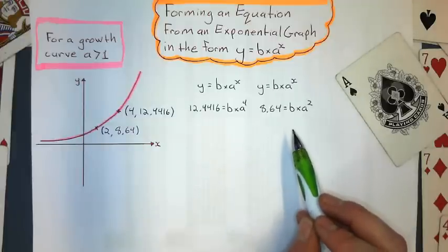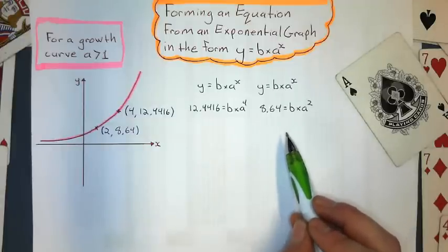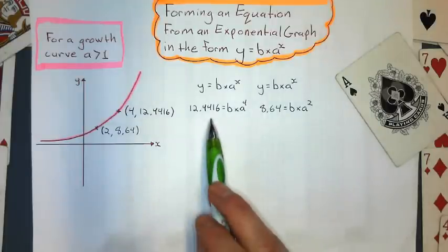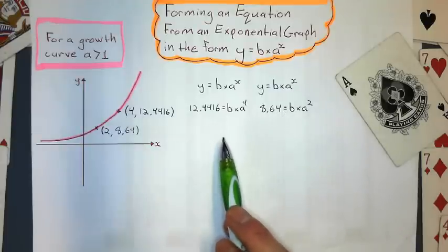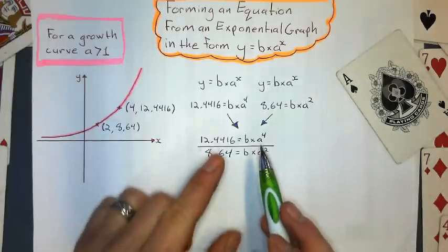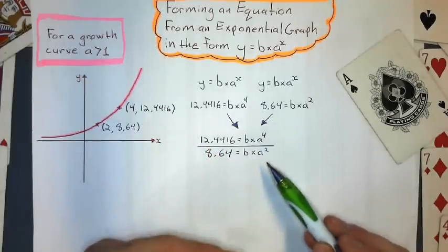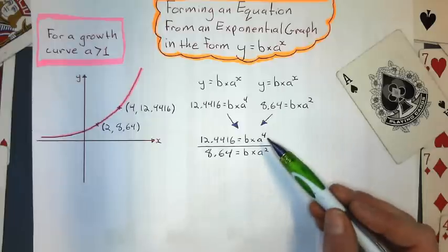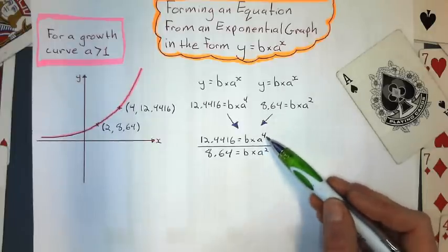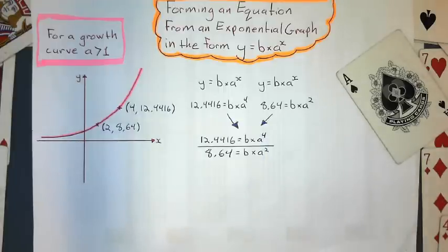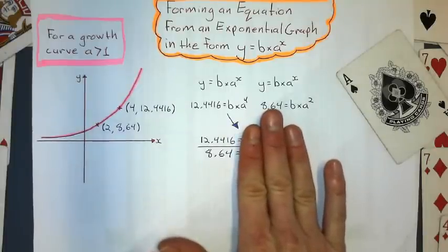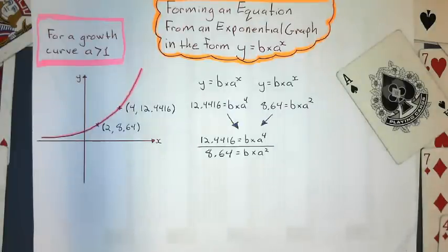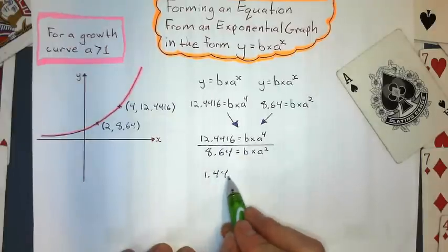Now what I want to do with simultaneous equations is cancel out a variable. And in this case, I'm going to cancel out b first by dividing this equation by this equation. So I set up my two equations. And which equation you divide by, I want to try to keep my exponents positive. So I put the higher degree power on top. Now I divide each part of the equation. So I'll divide the number parts first. 12.4416 divided by 8.64. When I divide these two, I get 1.44.